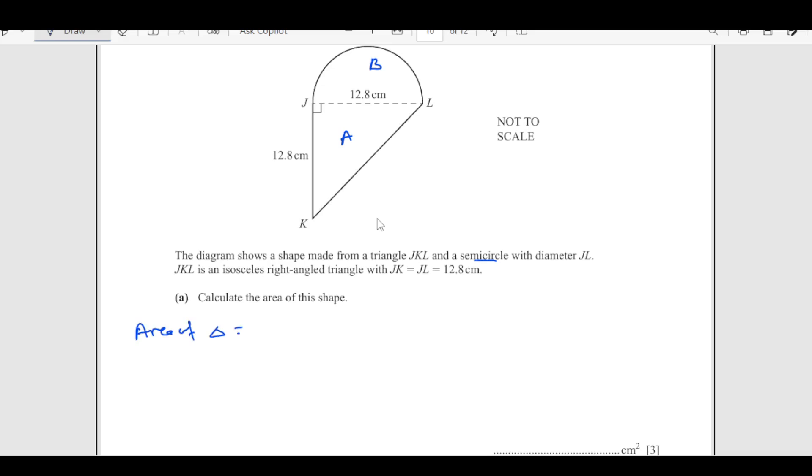So first I will find out the area of triangle. Area of triangle is half times base. Base is 12.8 times height. Height is also 12.8. This is 12.8. This is 12.8. So this comes out to be 81.92 centimeters squared.